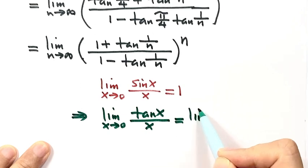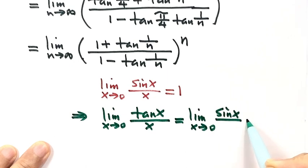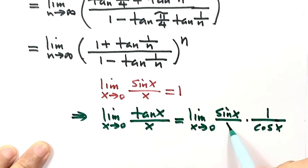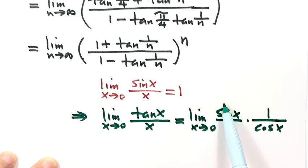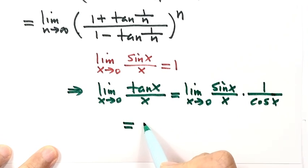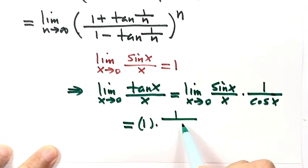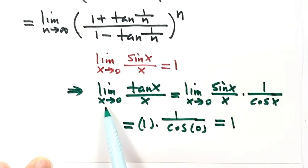Because tangent is just sine over cosine, we write tangent(x) over x as (sin x over x) times (1 over cos x). As x goes to 0, sin(x) over x goes to 1, and 1 over cos(0) is also 1. So the limit of tangent(x) over x as x goes to 0 equals 1.